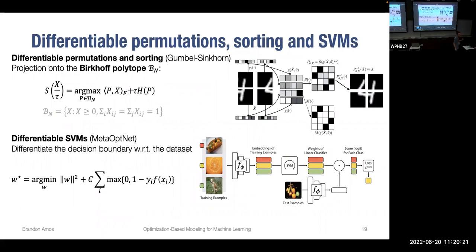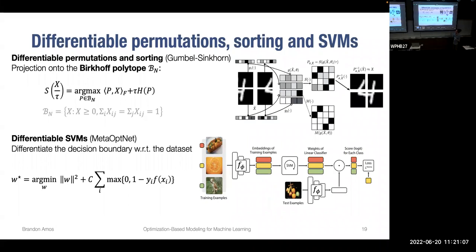The Birkhoff polytope — the set of doubly stochastic matrices — also has this projection flavor. It captures permutations and is used for optimally coupling discrete measures. The Gumbel-Sinkhorn paper used this idea: project onto the Birkhoff polytope and differentiate through this optimization problem, enabling learning of latent permutations that exist on the Birkhoff polytope.